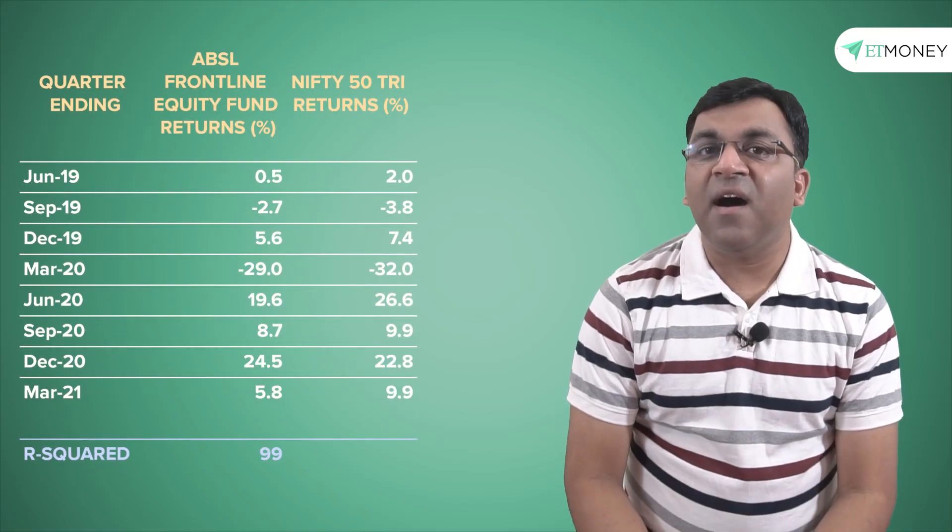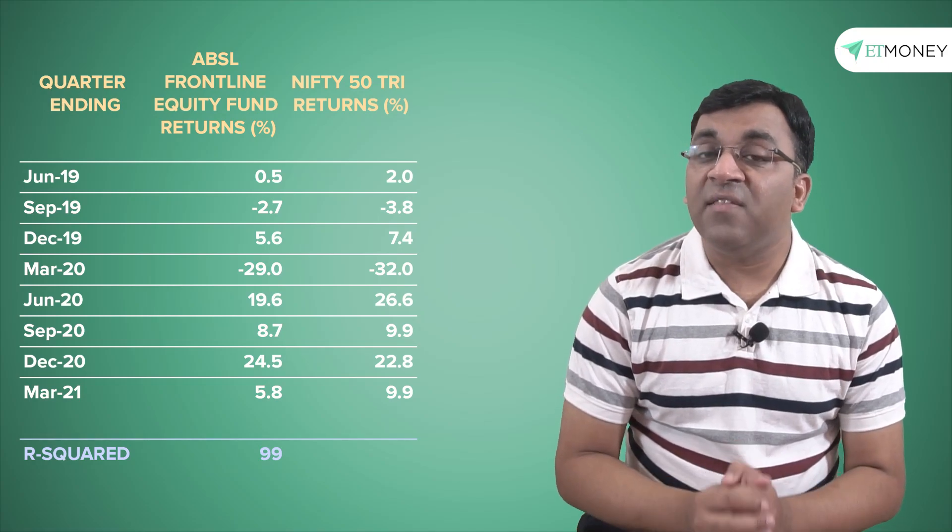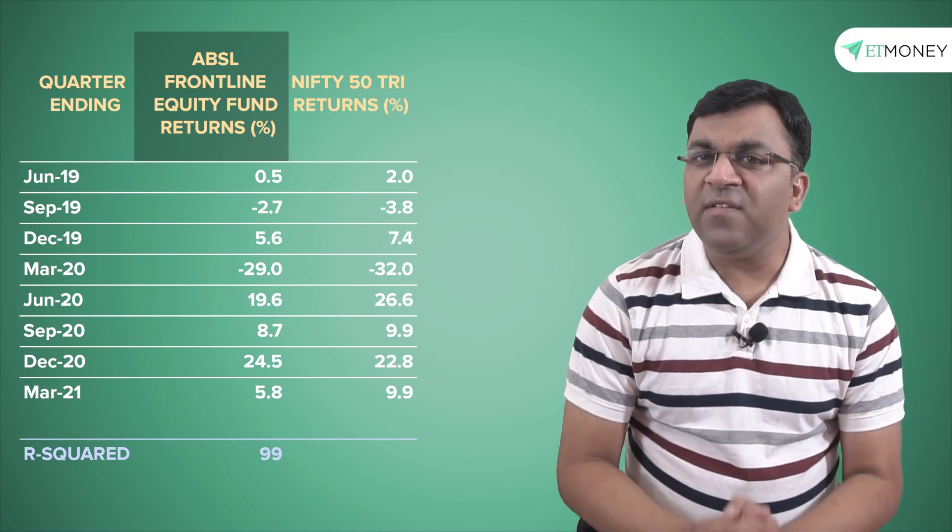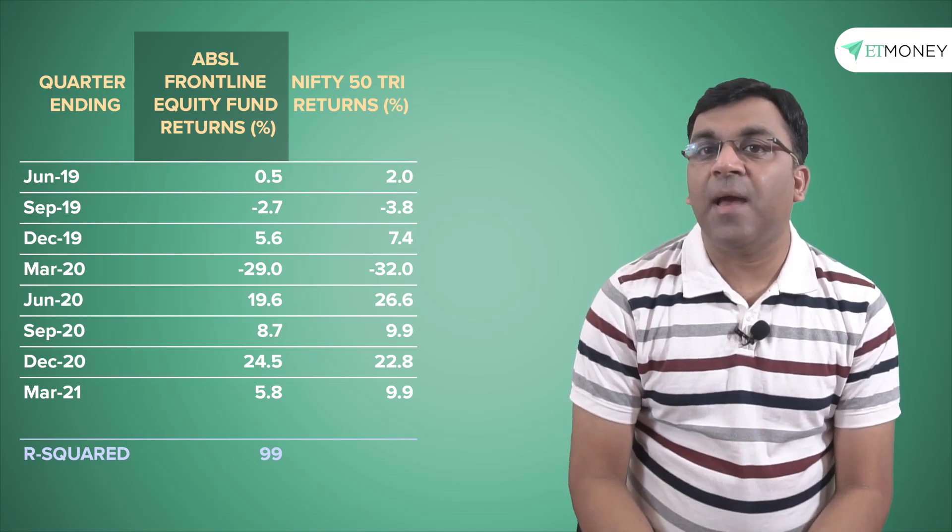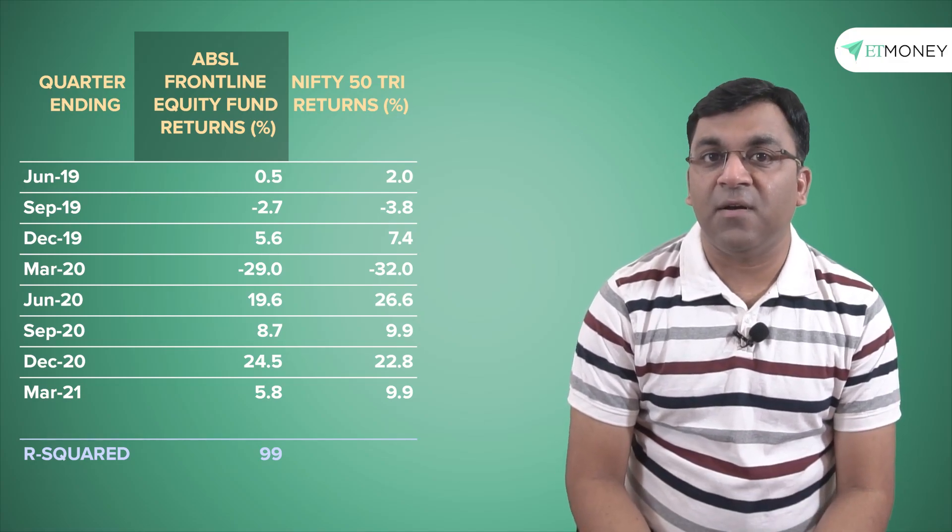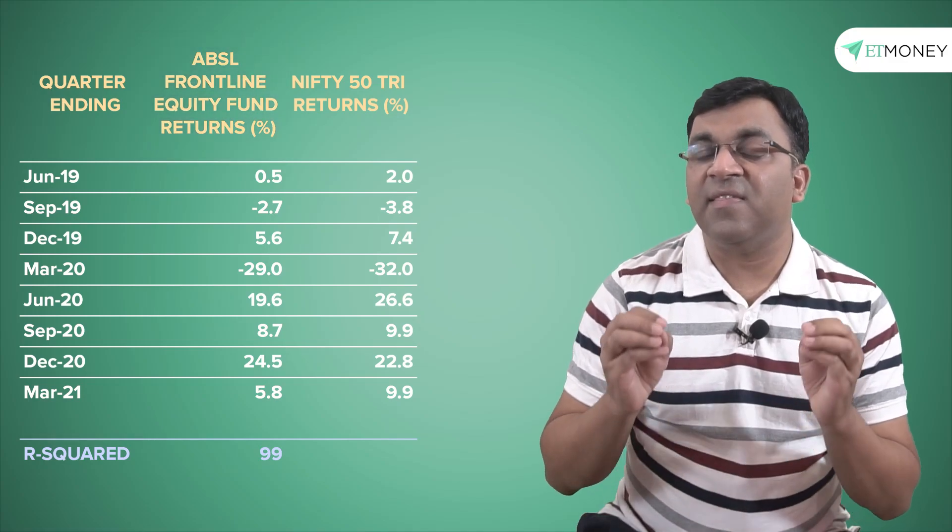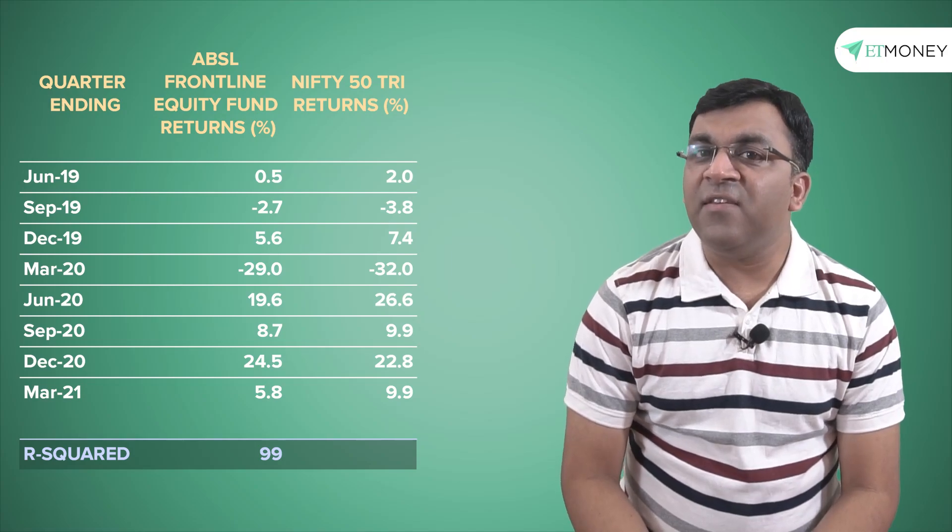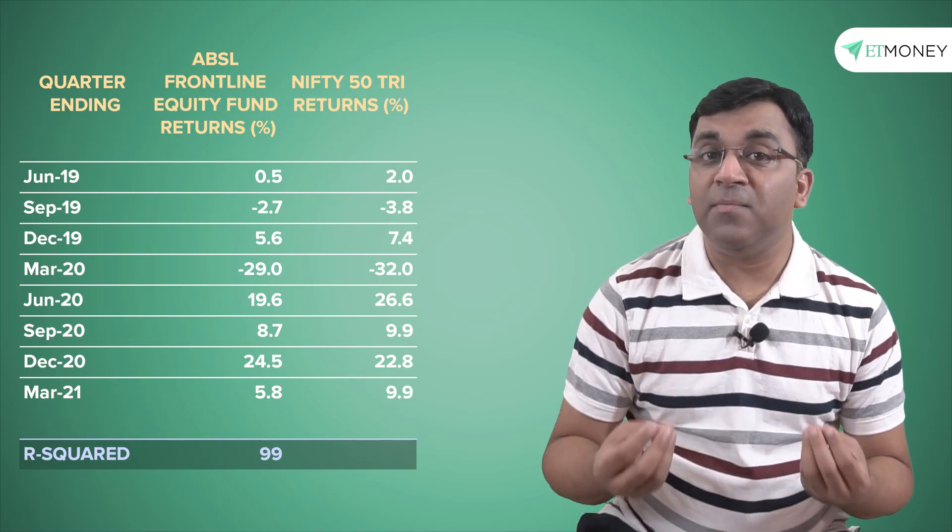For example, we have compiled here the last eight quarters of the performance for the Aditya Birla Sun Life Frontline Equity Fund. Notice how the performance of this large cap fund is matching with the benchmark, so it comes as no surprise that the R-squared of this fund is 99. Now this information is rather useful to an investor like you and me.